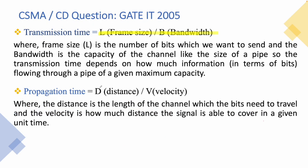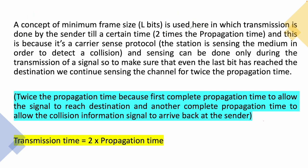We find the propagation time using distance divided by velocity. The concept of minimum frame size requires that the sender transmits until 2 times the propagation time. Collision detection can only be performed during transmission, which continues until twice the propagation time — one propagation time for sending the signal and the other to confirm the signal has reached and there is no collision.